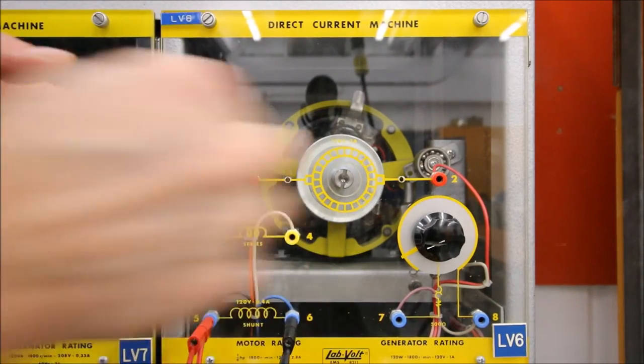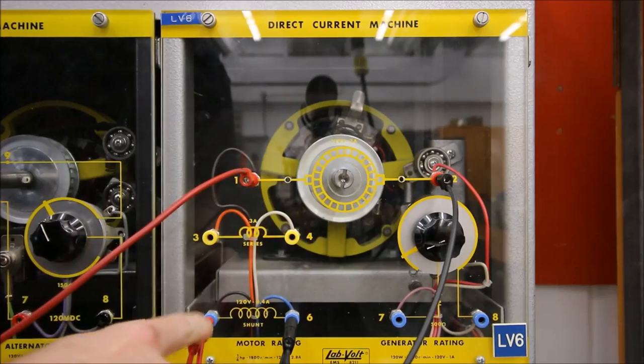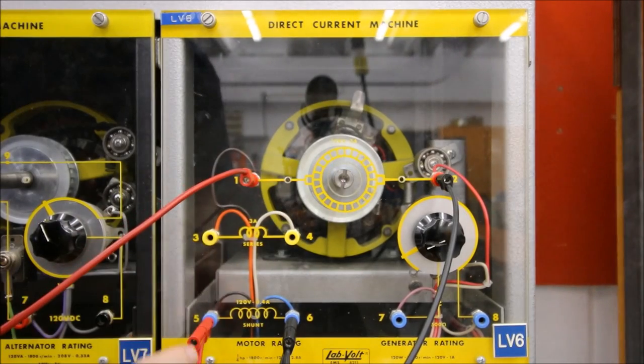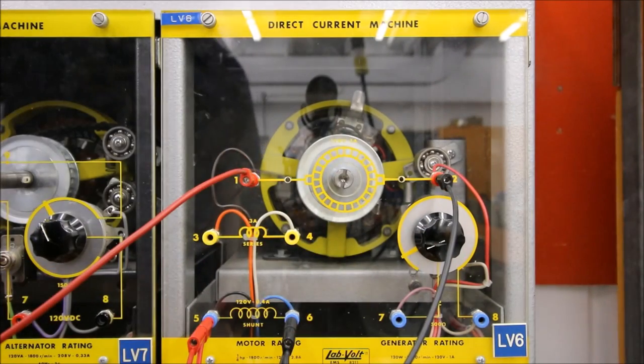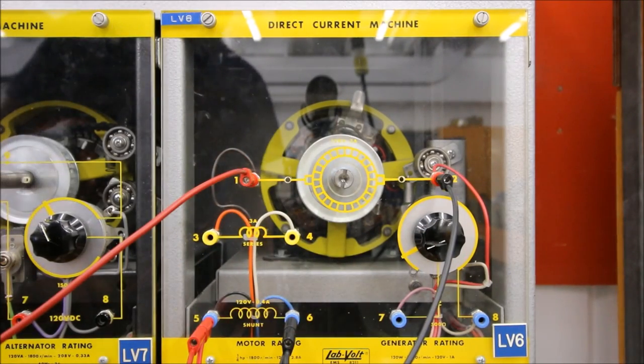So I'm going to do a parallel connection between the armature and the shunt winding. Okay, so my F1 and A1 are at the same potential, and my A2 and F2 are at the same potential as well. Let's turn this guy on and see how it sounds.